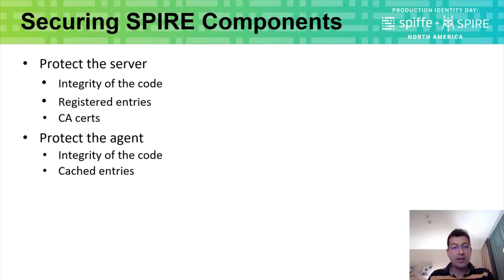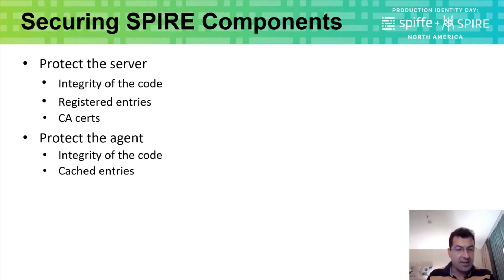On the agent side, you can protect the integrity of the Spire agent code and also protect the cached entries on the agent. If someone gets access to the machine where the Spire agent is running, the agent would have cached several SVIDs, and these could be stolen from memory. SGX enables you to block this access so that an attacker cannot steal the secrets from memory.